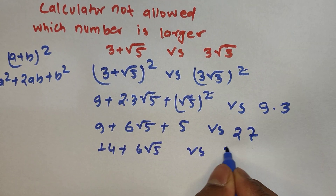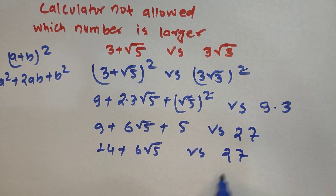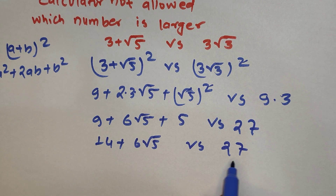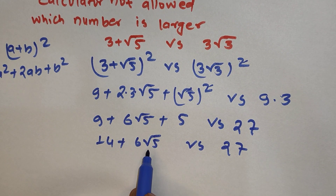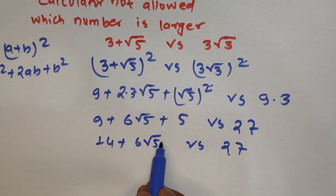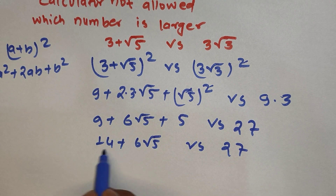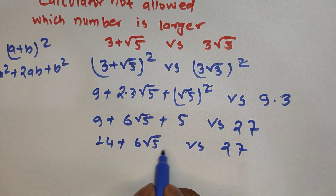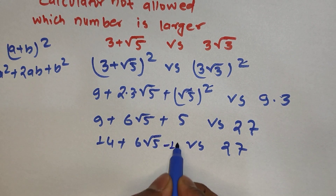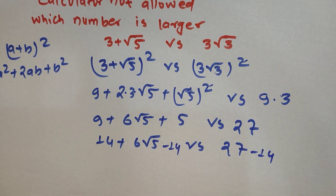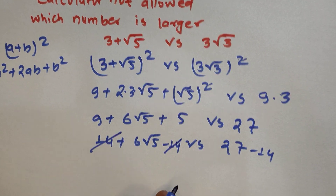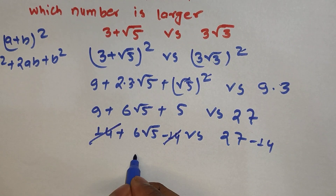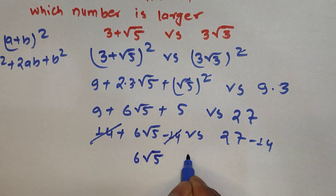So we have 14 + 6√5 versus 27. We've removed the square root from the right side, but there's still a square root on the left. We subtract 14 from both sides: the 14s cancel, leaving 6√5 versus 27 − 14, which is 13.